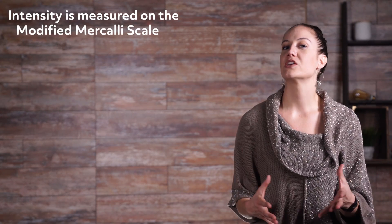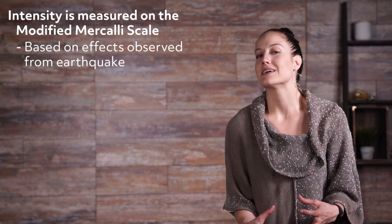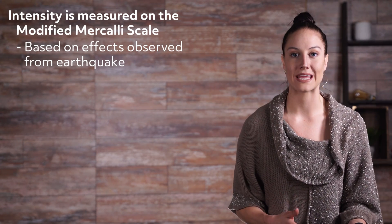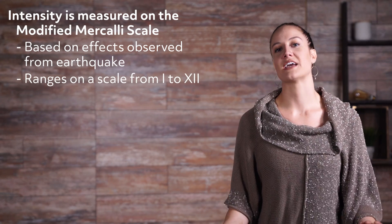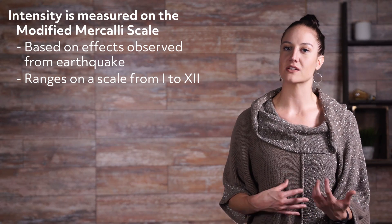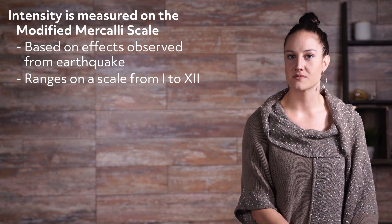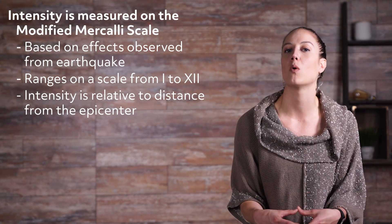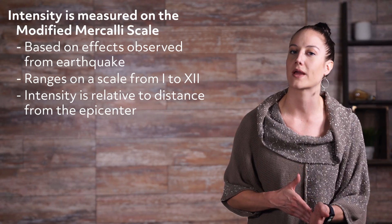In addition to measuring an earthquake's magnitude, we can also measure its intensity. Intensity is measured on the modified Mercalli scale, which is based on effects observed from the earthquake and to what degree those effects are felt. It ranges on a scale from 1 to 12, with 1 being the lowest effects and 12 being total loss. Rather than plugging numbers into logarithms, an earthquake's intensity is relative to someone's or something's distance from the epicenter of the earthquake when it occurs.